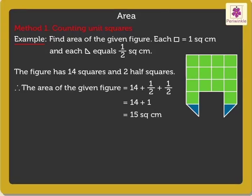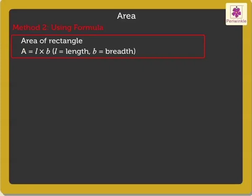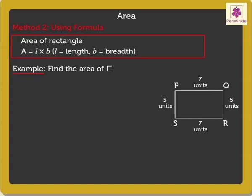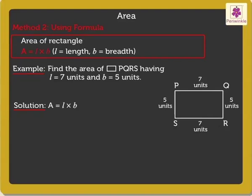Now let's see how to find the area using formulas. The area of a rectangle can be found by using the formula A = L × B, where A is the area, L is the length, and B is the breadth of the rectangle. Let's use this formula to find the area of rectangle PQRS having length seven units and breadth five units. Therefore by using the formula, area equals length into breadth, we get the area as thirty-five square units.